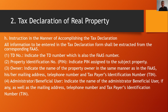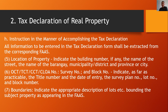The Tax Declaration (TD) number is also the FAAS number. Indicate the Property Identification Number (PIN) and TIN assigned to the subject property. For the owner, indicate the name, mailing address, telephone number, and TIN in the same manner as in the FAAS. For the administrator or beneficial user, indicate the name, mailing address, telephone number, and TIN.